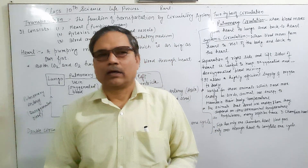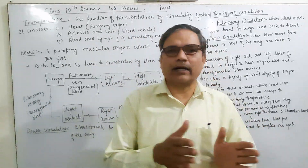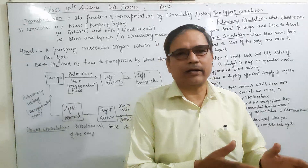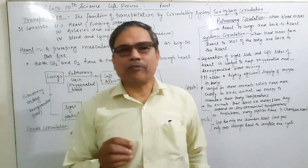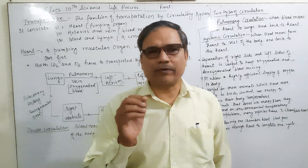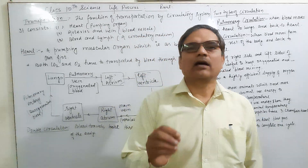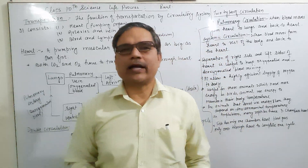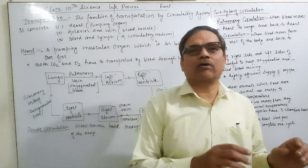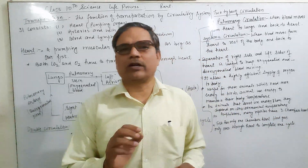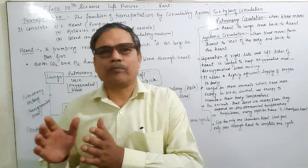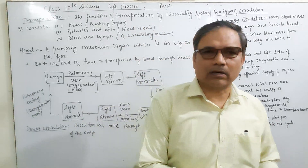The four chambers are: right atrium, right ventricle, left atrium, and left ventricle. The left part of the heart — left atrium and left ventricle — always carries pure oxygenated blood. The right part of the heart — right atrium and right ventricle — always carries deoxygenated or impure blood.